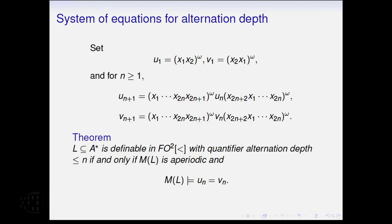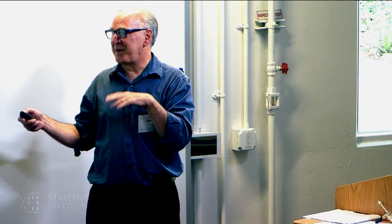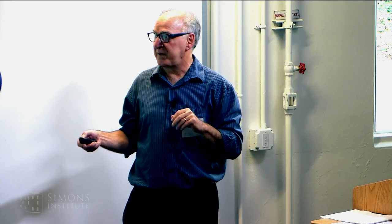And the language is definable in two-variable logic with quantifier depth less than or equal to n if and only if the syntactic monoid is aperiodic, and that means it has no non-trivial groups inside. And it satisfies this equation, U sub n equals V sub n. And just in contrast, so that gives a nice criterion for this. The analogous problem for quantifier alternation depth, if you don't have this variable restriction, is a very long open problem. There was this recent breakthrough just a few years ago by Placin-Zetun that decides membership in sigma 3 and the Boolean closure of sigma 2. I think there's also an argument for sigma 4, but this is very difficult, much more difficult than what's done for the two-variable logic and still an open problem for the other levels.